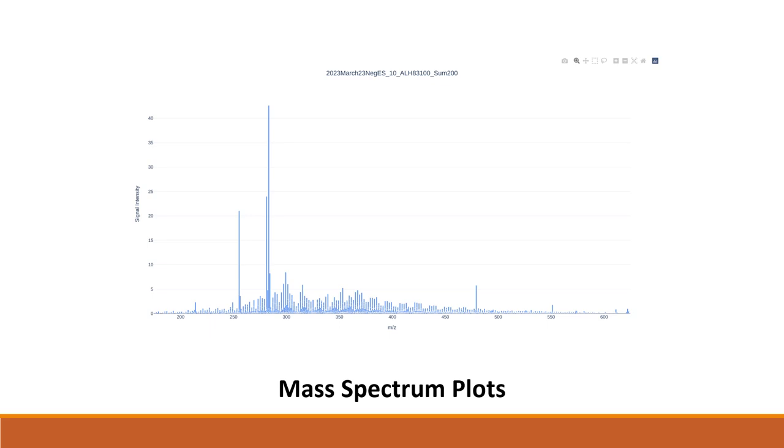Mass spectrum plots, like the one shown here, plot the relative abundance of detected ions against their mass-to-charge ratio, allowing for isotopes with a high presence in the sample to be identified. This can be seen in the peaks shown on this graph.